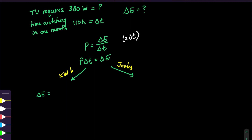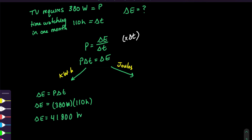For kilowatt-hours, we use power times the change in time: 380 watts times 110 hours. This gives units of watt-hours. To convert to kilowatt-hours, we divide by 1,000 because there are 1,000 watts in a kilowatt. That gives us 41.8 kilowatt-hours.